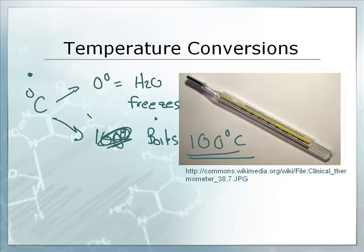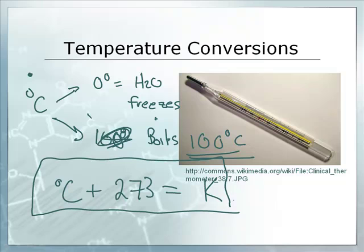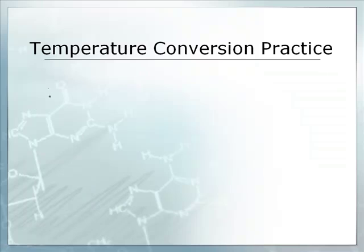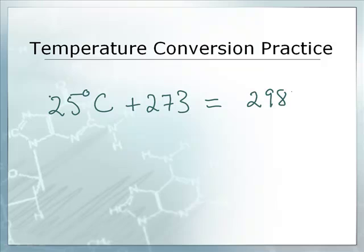Let's convert. What we really care about is that there's a conversion between Celsius and Kelvin. Degrees Celsius plus 273 equals Kelvin. Notice I didn't write degrees Kelvin, just Kelvin. So let's do some practice. Let's say I have 25 degrees Celsius, pretty typical room temperature. What is that in Kelvin? Just add 273. I don't even need a calculator on that one. That's 298K.